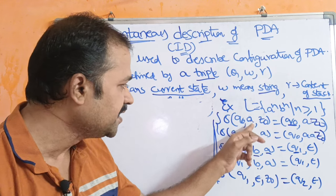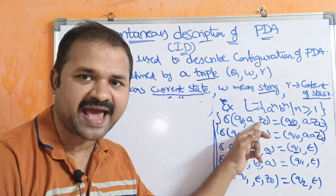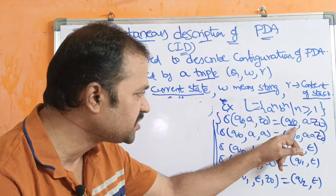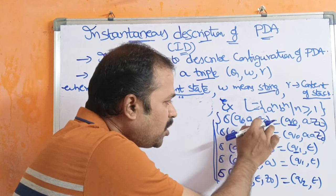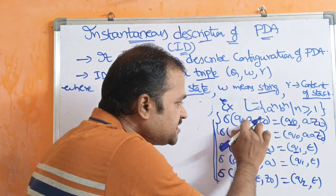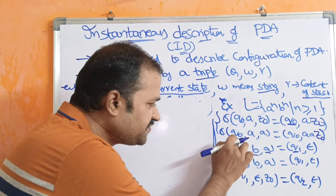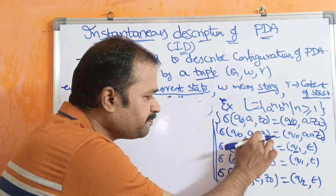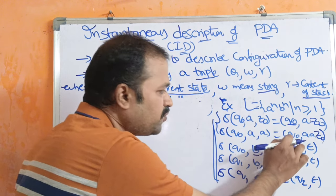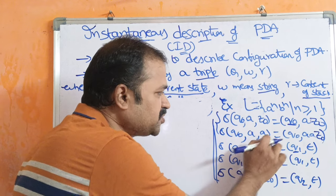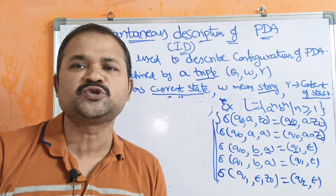If the current state is Q0, input symbol is A, and the stack is empty, then the next state is Q0 and we need to push A onto the stack, so Z0 will be replaced with AZ0. Next, if the current state is Q0, input symbol is A, and the stack's top symbol is A, then we need to push A onto the stack — so AA replaces A, with Z0 below. The first two transition functions are push operations.